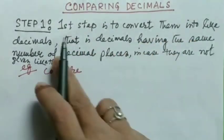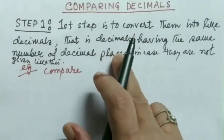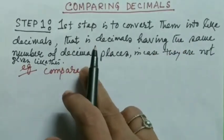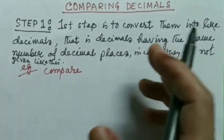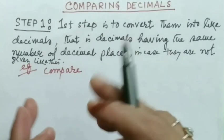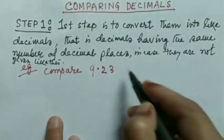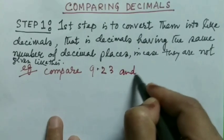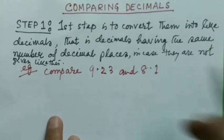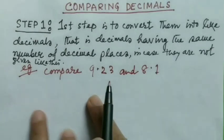Step one: first step is to convert them into like decimals, that is decimals having the same number of decimal places in case they are not given like this. So let me take an example: compare 9.23 and 8.1.